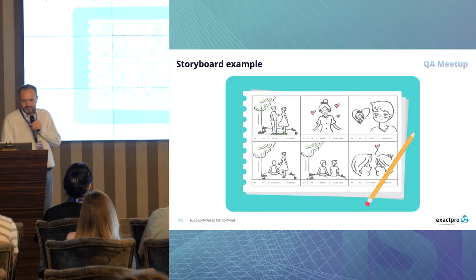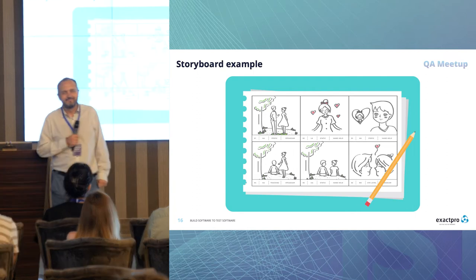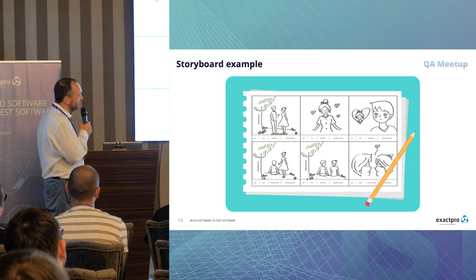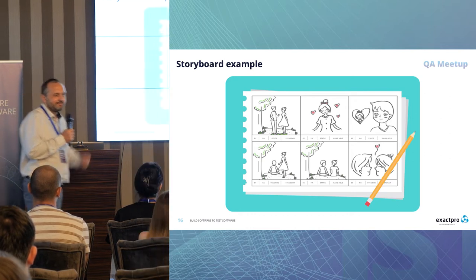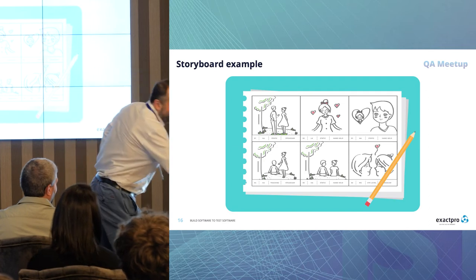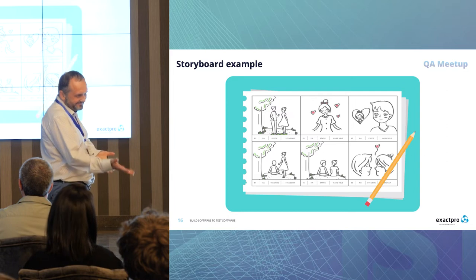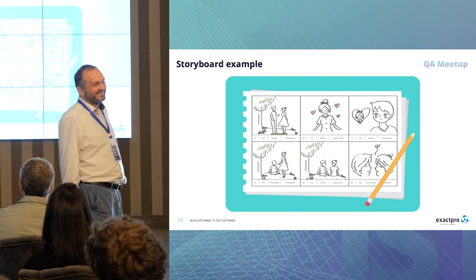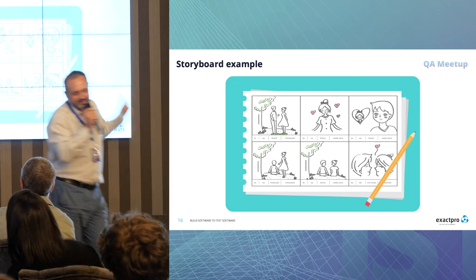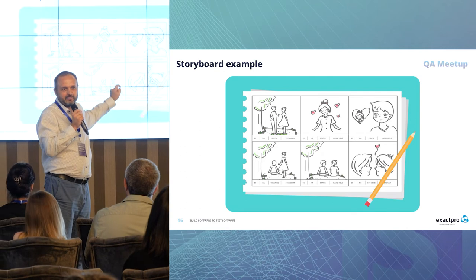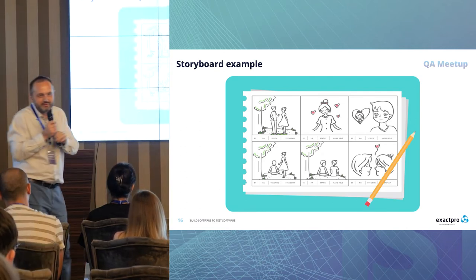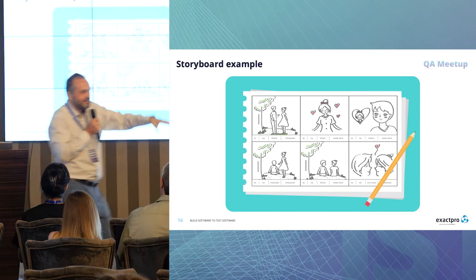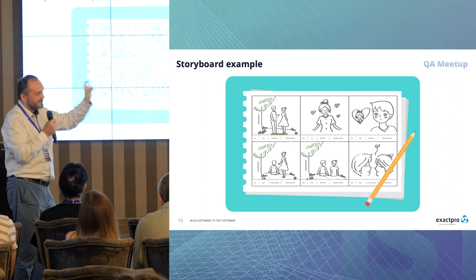Look at this picture. Can you explain the story? A girl and a boy met each other. She fell in love, and he thought about her. Then they met again. Why is this important? You see — it has no text at all. No text, no comments, just six pictures, and you understand everything, and everyone agrees with the story.